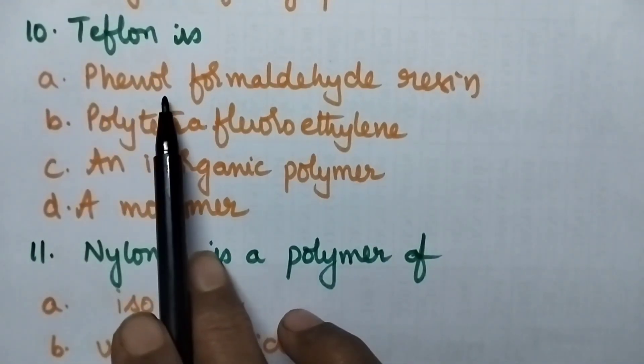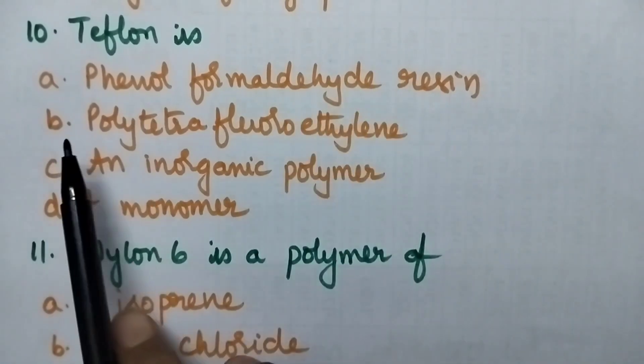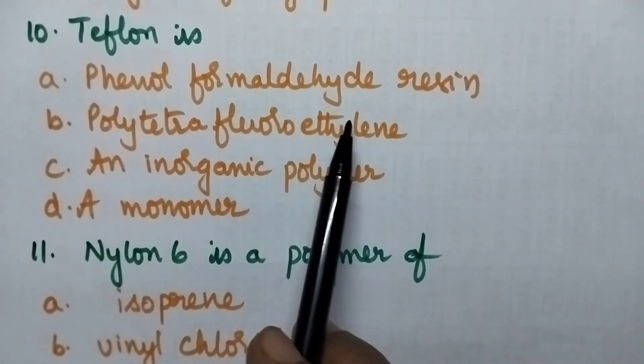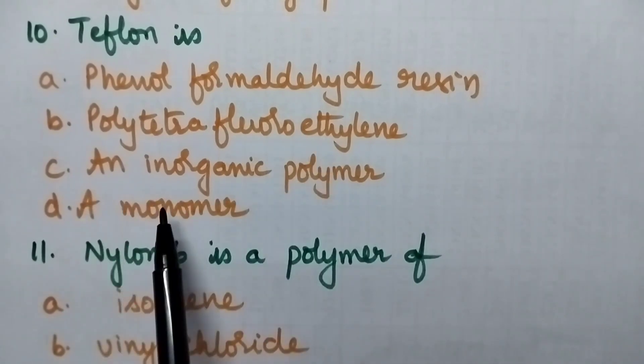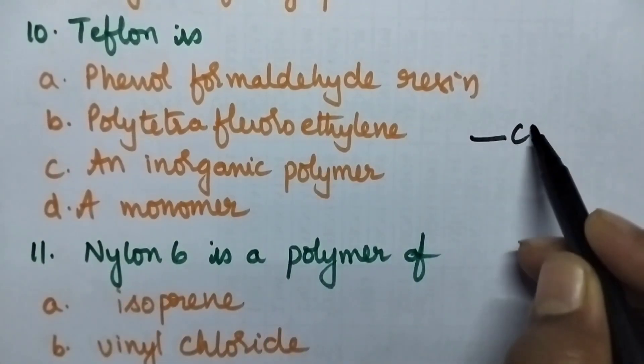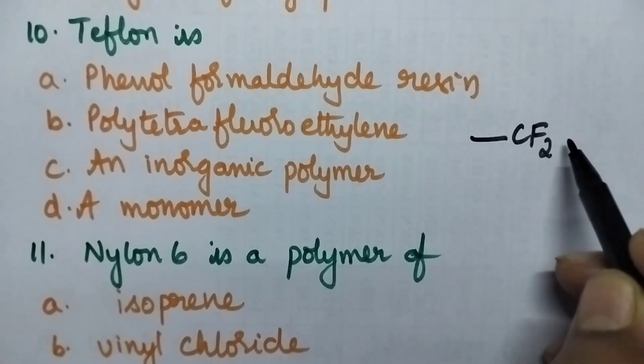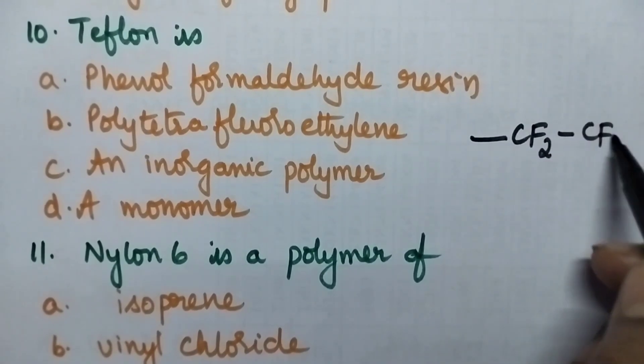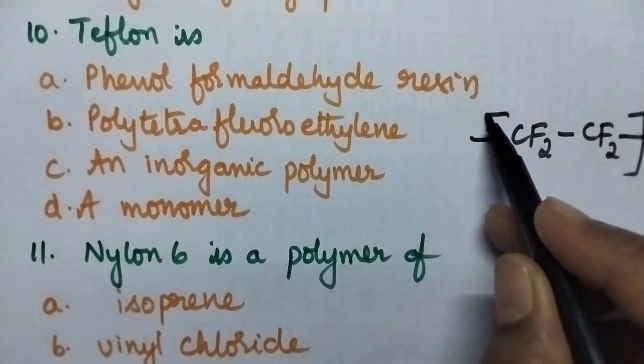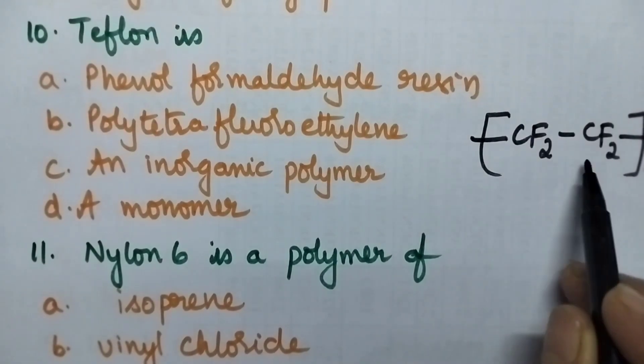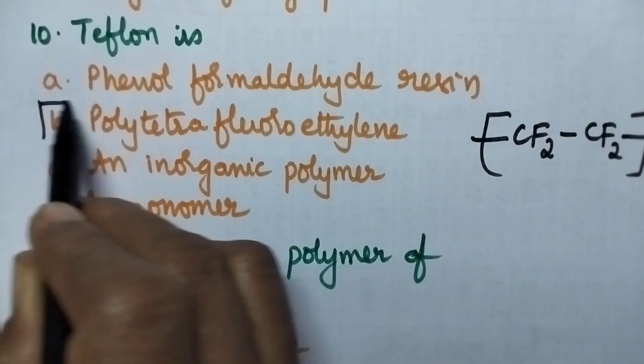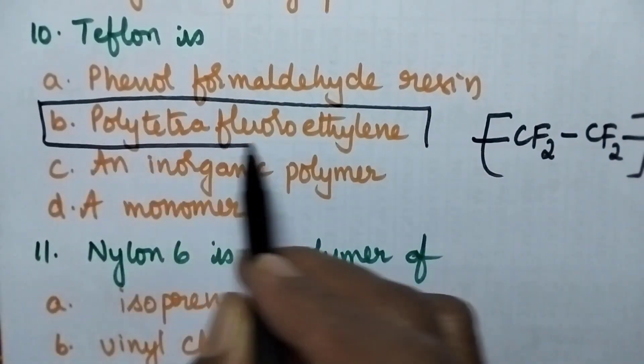Teflon is? A. Phenol formaldehyde resin, B. Polytetrafluoroethylene, C. An inorganic polymer, D. A monomer. Teflon means it can be written as CF2 single bond CF2 N times. So it is polytetrafluoroethylene. So option B is the right answer.